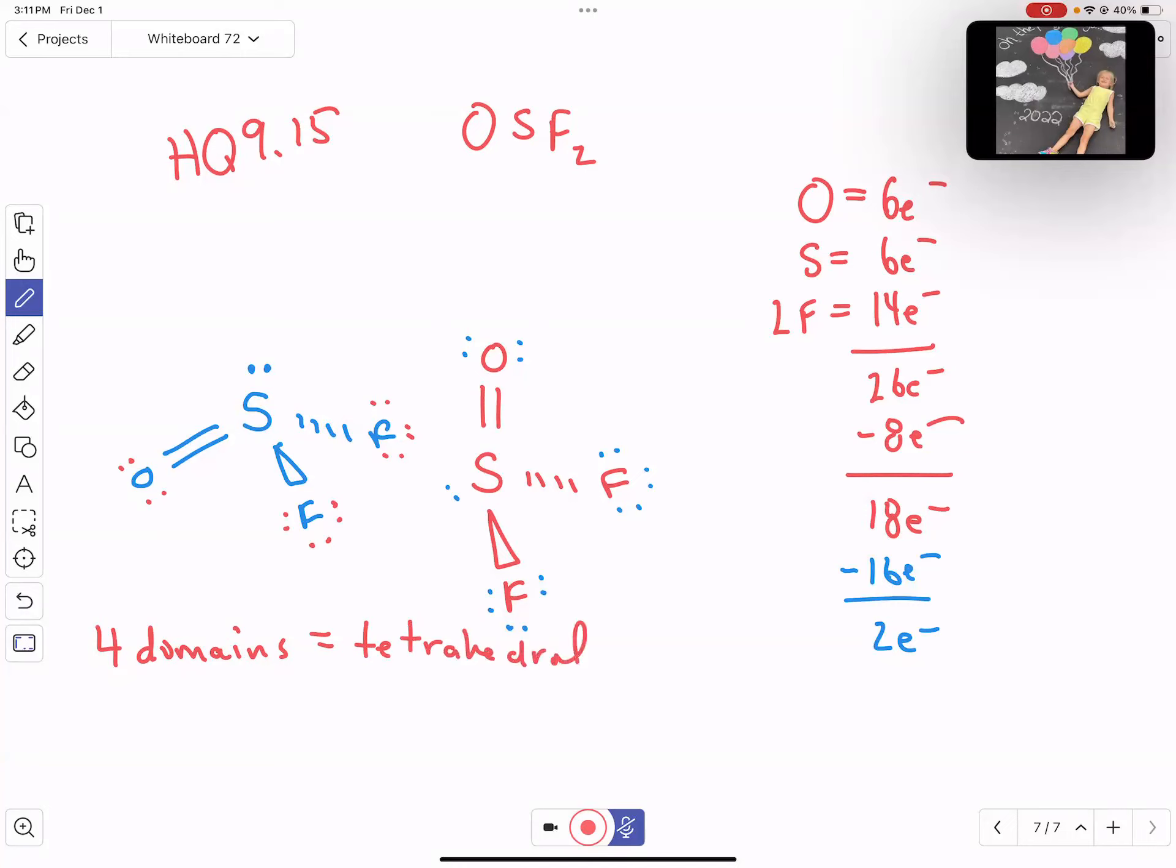Of those four domains, three are bonding. Three bonding domains, which puts us trigonal pyramidal. So that's like the same molecular geometry as ammonia.